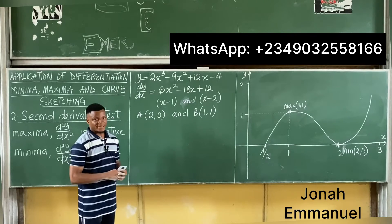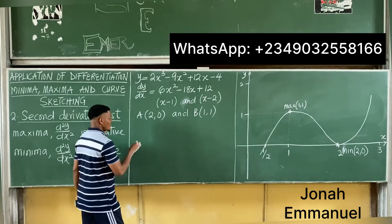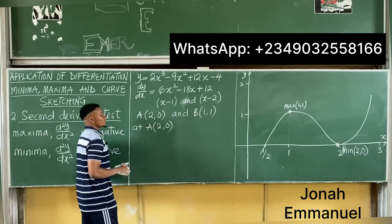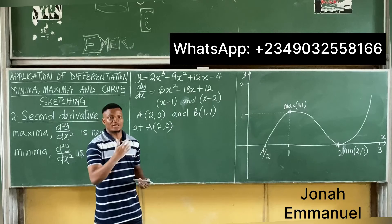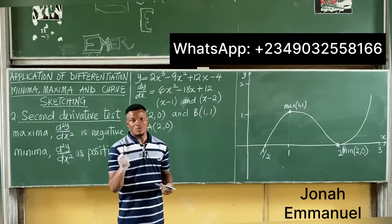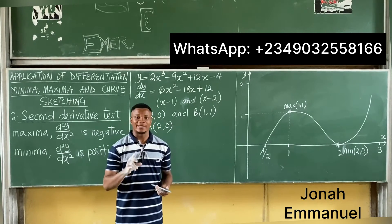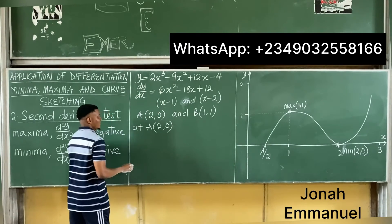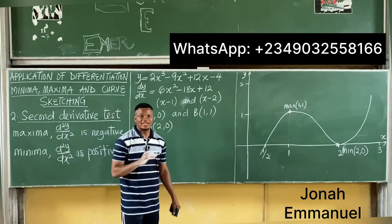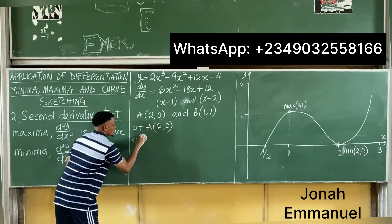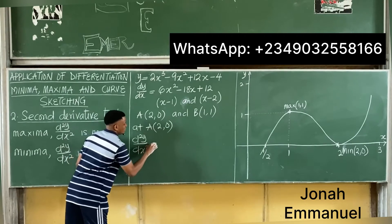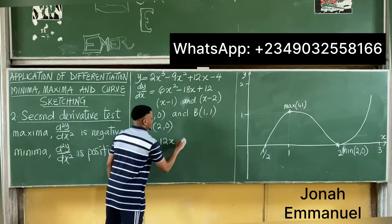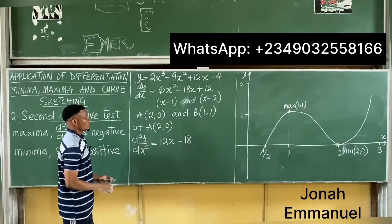This is where the second derivative test takes place. Let's take point A at (2, 0). To use the second derivative test, I need to find d²y/dx² — that means differentiating y twice. Differentiating dy/dx = 6x² - 18x + 12 gives d²y/dx² = 12x - 18.